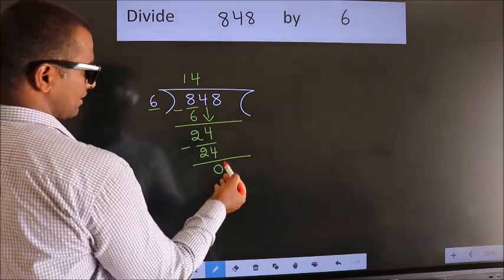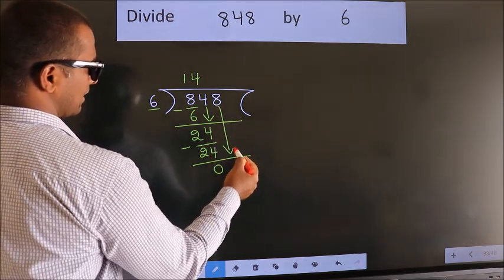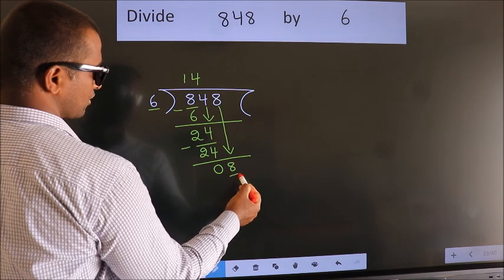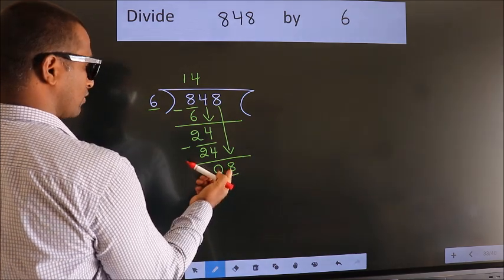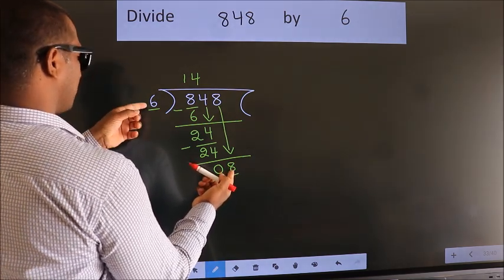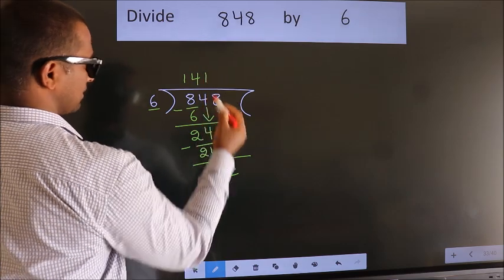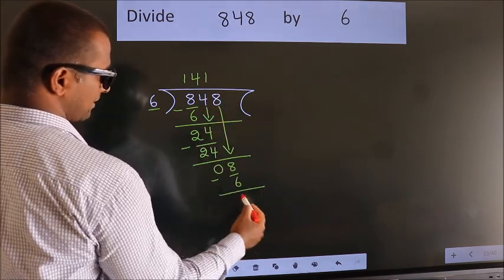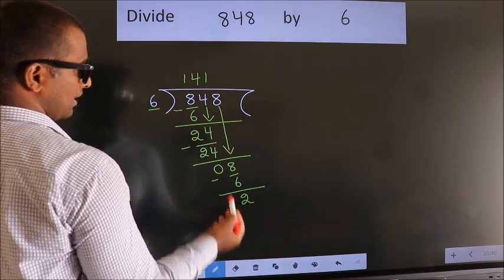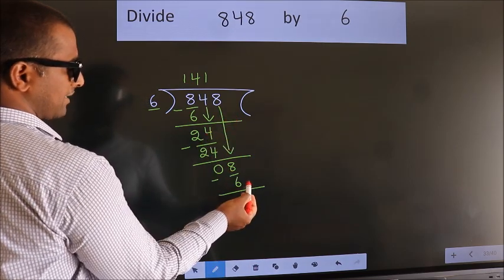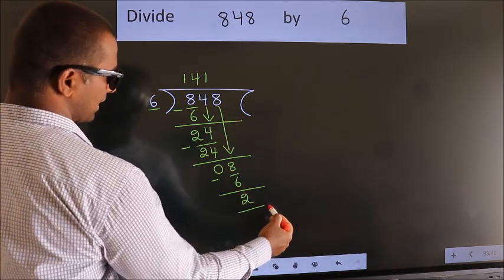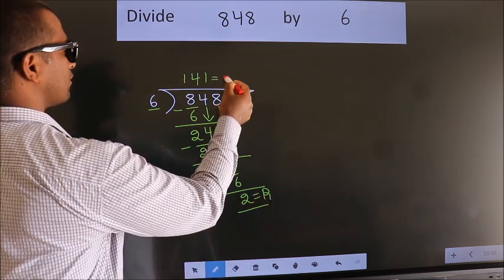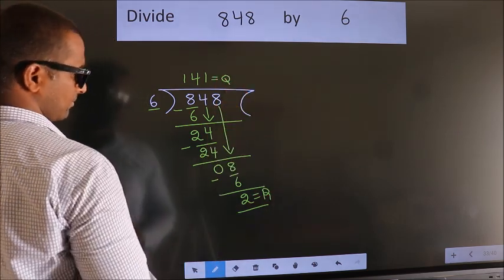After this, bring down the beside number, so 8 down — so 8. A number close to 8 in the 6 times table is 6 — 6 ones are 6. Now we subtract, we get 2. No more numbers to bring down, so we stop here. This is our remainder. This is our quotient.